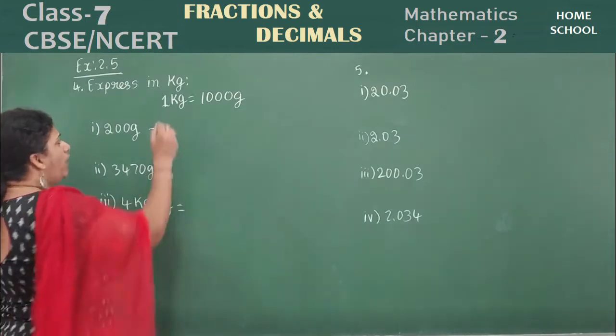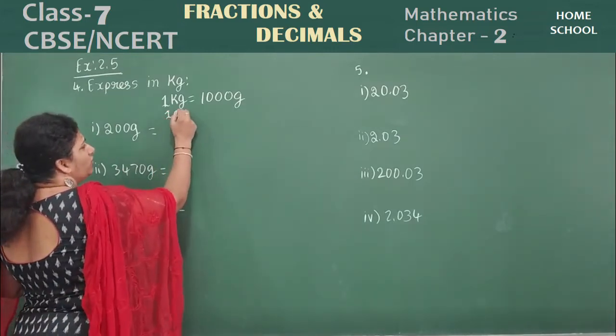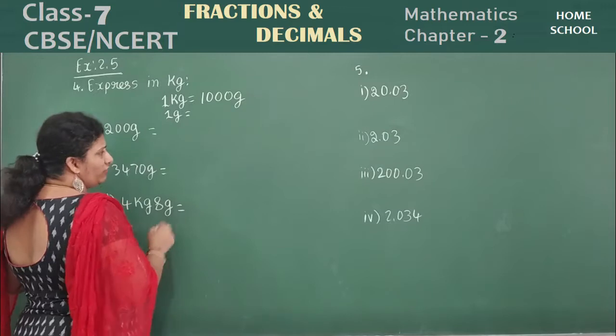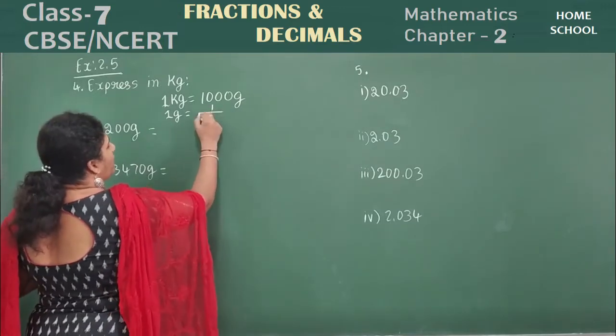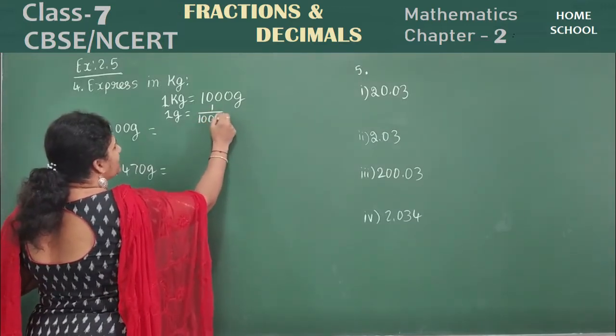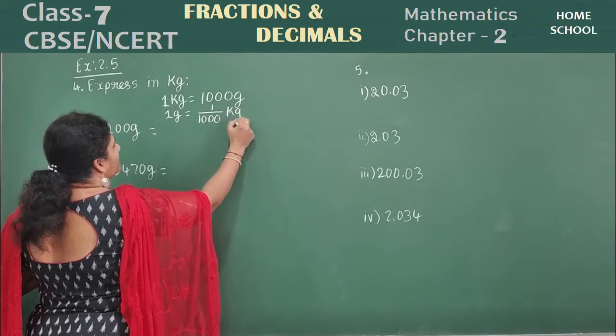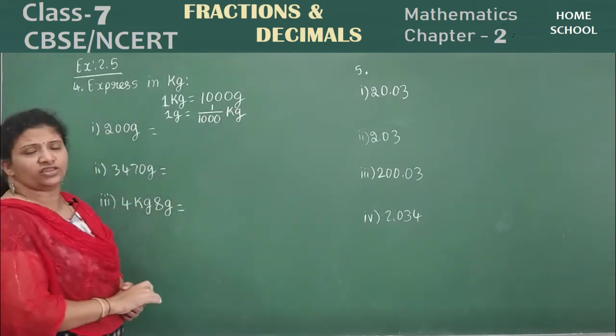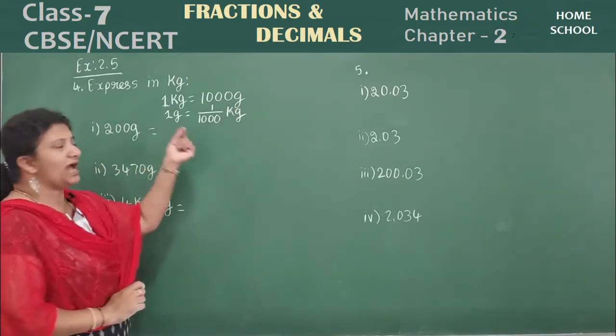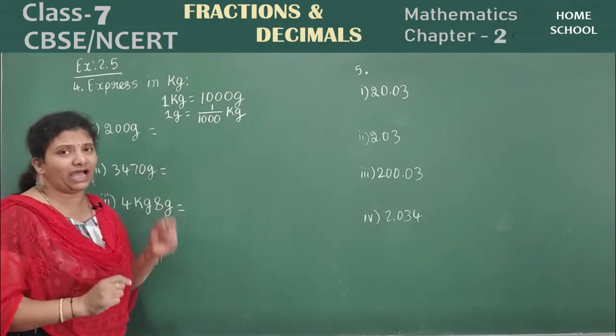Similarly, one gram is equal to how will you write in the form of kg? One by thousand kg. One kg is equal to thousand grams. One gram is equal to one by thousand kg.